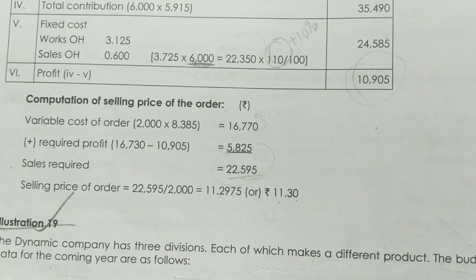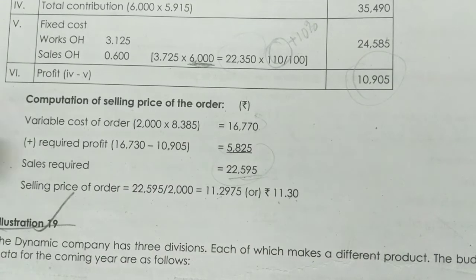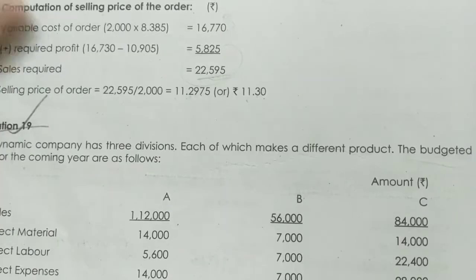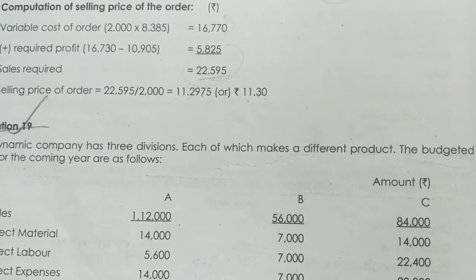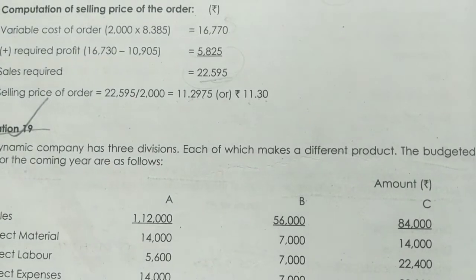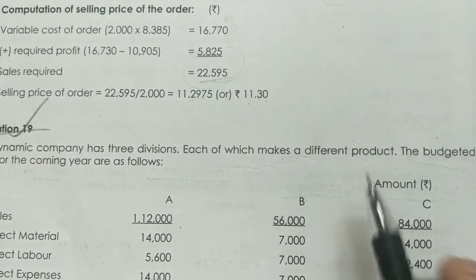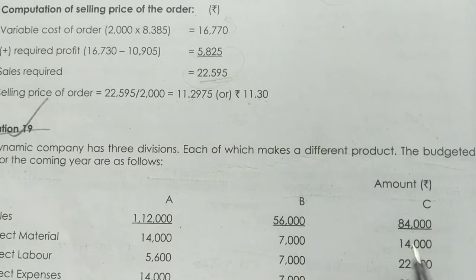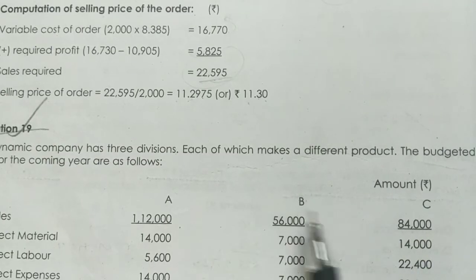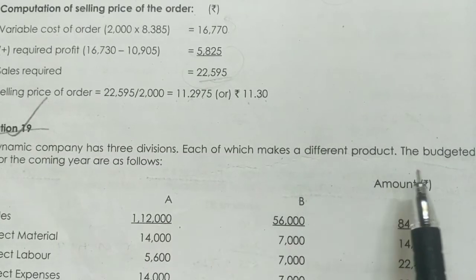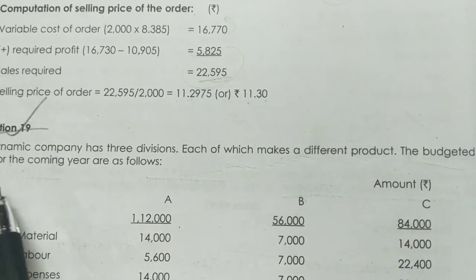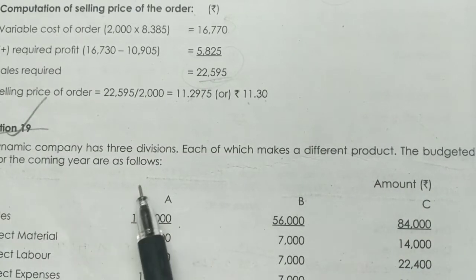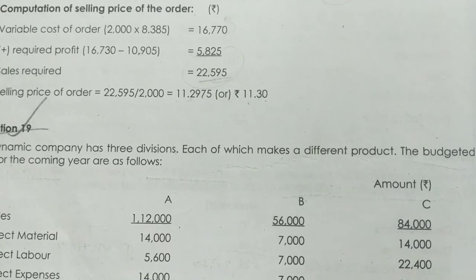Now we have Illustration 19. Dynamic Company has 3 divisions, each of which makes different products. Budgeted data for the coming year includes sales, direct material, labor, and direct expenses.